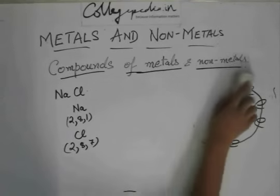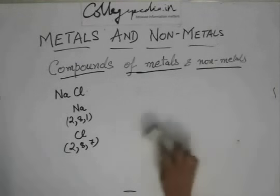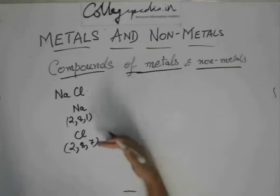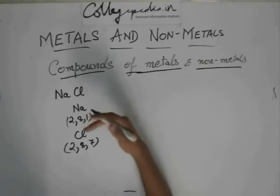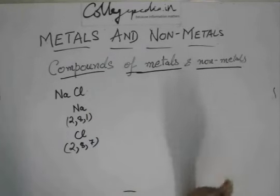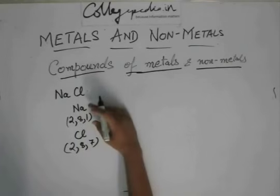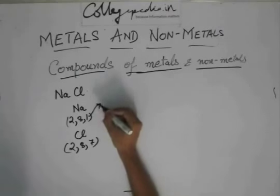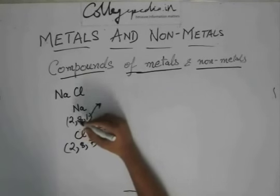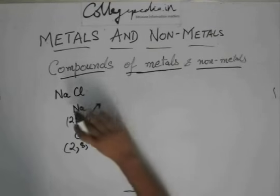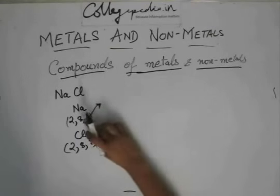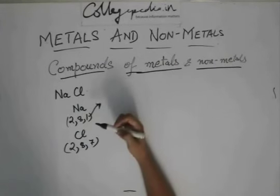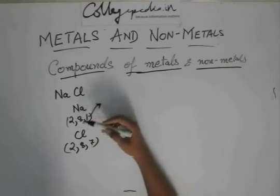So, if you see carefully that, now we know the octet rule which says every element wants to have 8 electrons in their outermost orbit. So, in here, sodium will want to donate this 1 electron so that it can have a configuration of 2, 8, and it has 8 electrons in its outermost orbit. Because after donating or just giving away this 1 electron, you will have just 2 shells, and then you have 8 in the outermost shell.